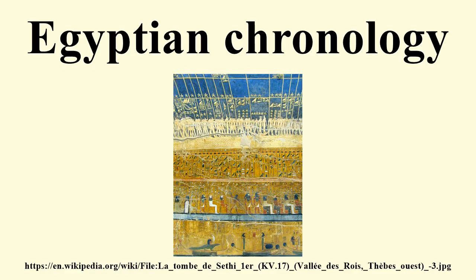Another example are blocks from the Old Kingdom bearing the names of several kings, which were reused in the construction of Middle Kingdom pyramid temples at Lisht in the structures of Amenemhat the First. Likewise, the third pylon at Karnak, built by Amenhotep the Third, contained as fill material from the kiosk of Sesostris the First, along with various stelae of the Second Intermediate Period and the Eighteenth Dynasty of the New Kingdom. Synchronisms with other chronologies — the most important being with the Assyrian and Babylonian chronologies, although synchronisms with the Hittites, ancient Palestine, and in the final period with ancient Greece — are also used.